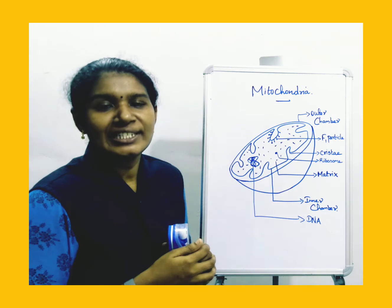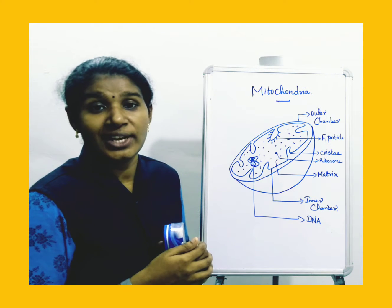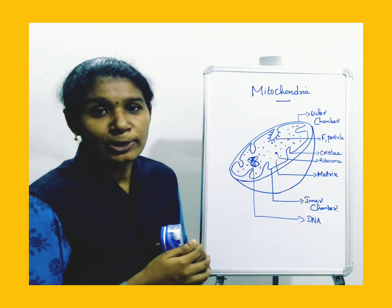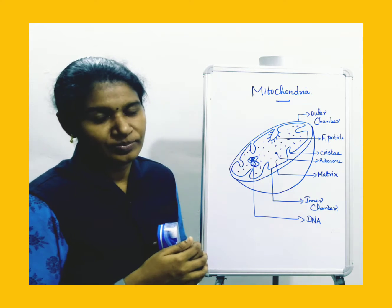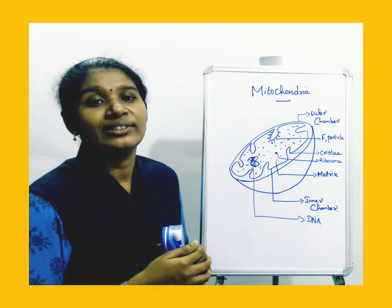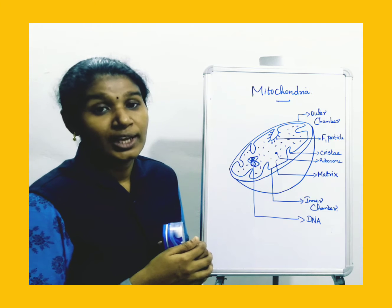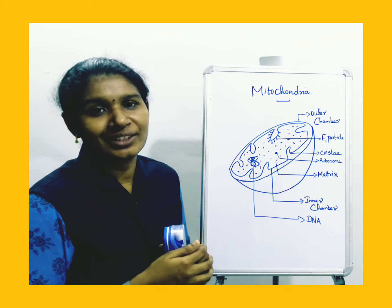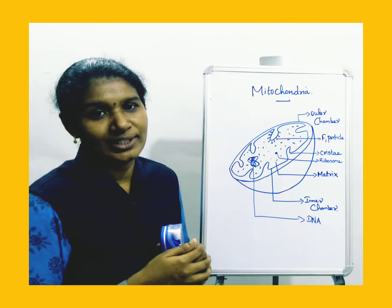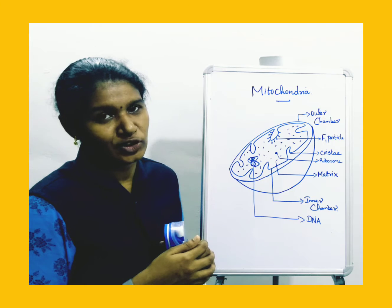Mitochondria is an organelle present in plant as well as animal cells. It is absent in prokaryotic cells. Mitochondria has a thread or granular-like structure. 'Mito' means a thread, and 'chondrion' means granules, so it is a thread or granular-like structure.